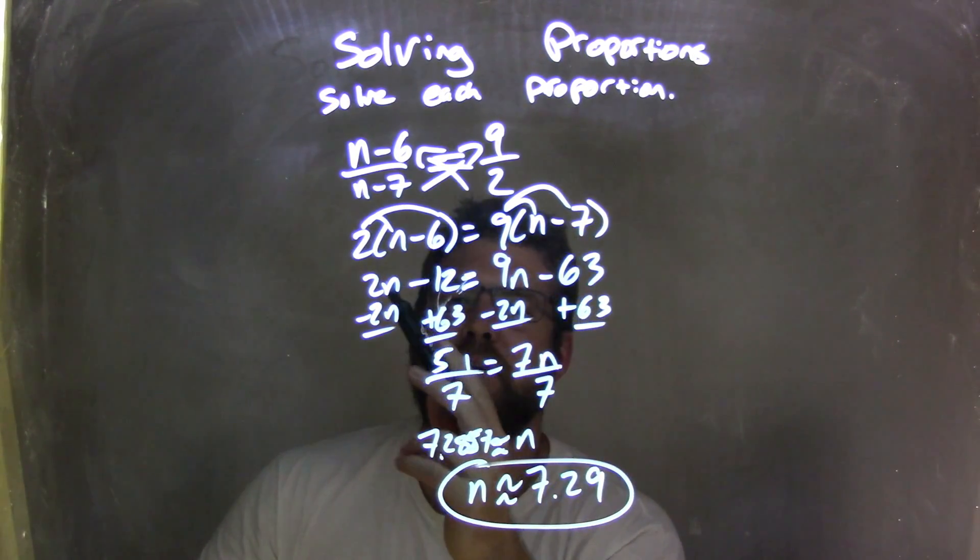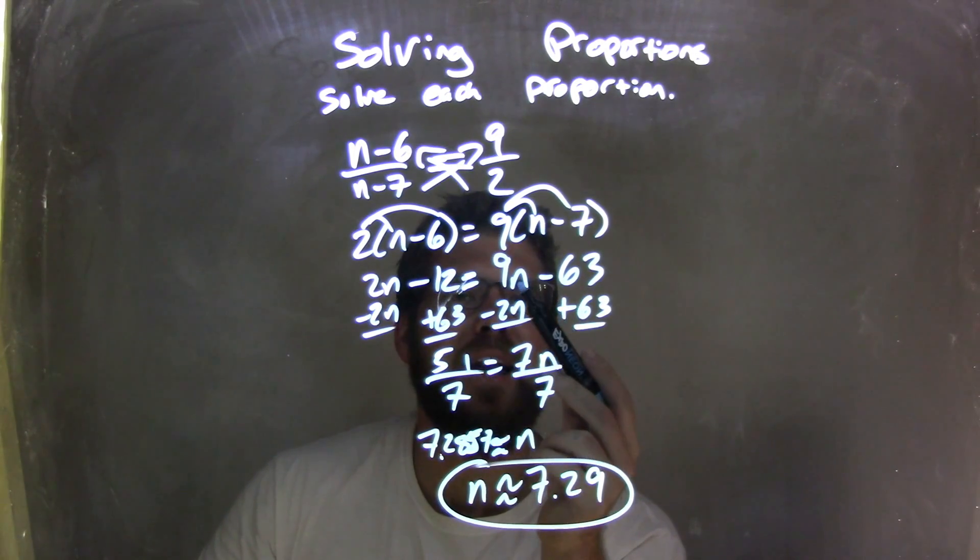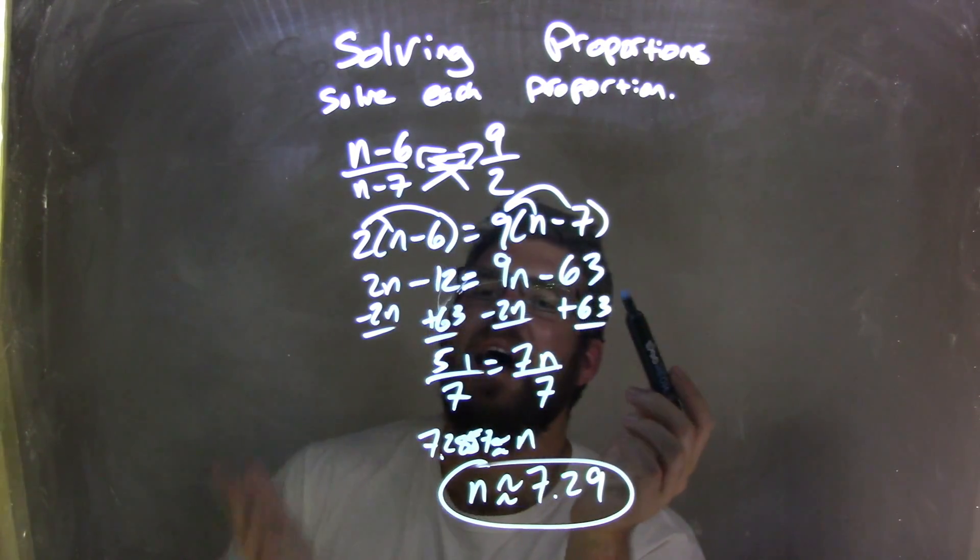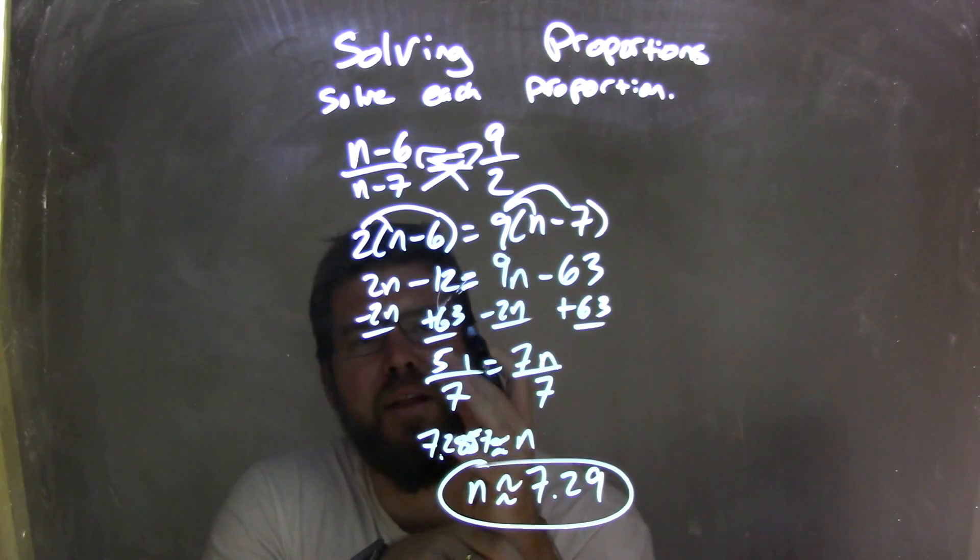I then distribute across here, giving me 2n minus 12 equals 9n minus 63. I then brought my like terms together, variables to the right, numbers to the left.